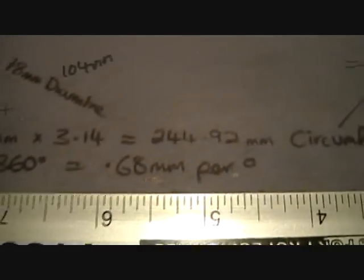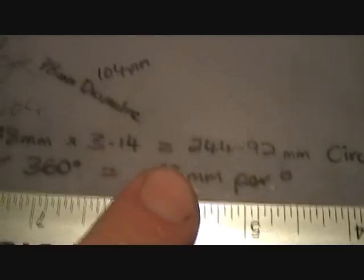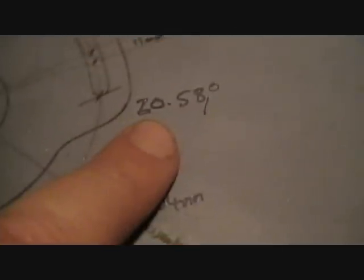From that we can now work out that 14 millimeters is equal to 20.58 degrees. So now I've got that information, we can put this back together and get cracking.